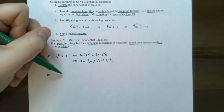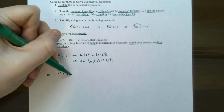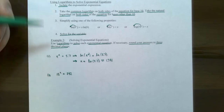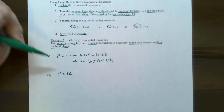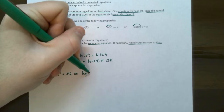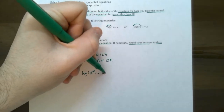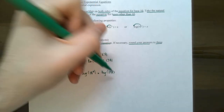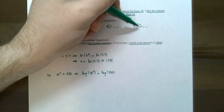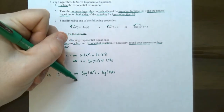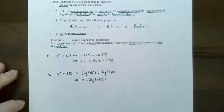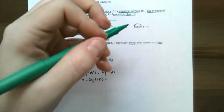Number two: ten to the x equals 342. We have base 10 raised to a power containing the variable, and the exponential expression is already isolated. Use the common logarithm because the base is 10. Log base 10 of 10 to the x equals just x, so x equals log of 342, which is approximately 2.534.